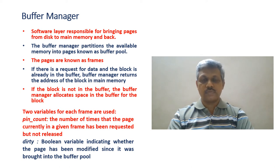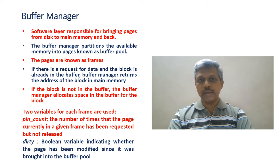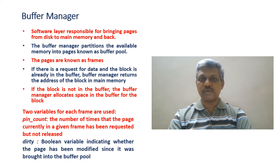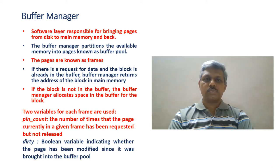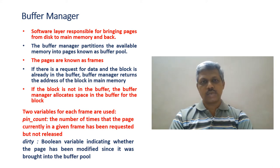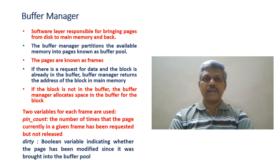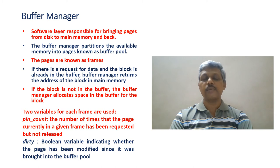Whereas if the data is not available in the buffer pool, then it has to allocate one of the frames for the transfer of data into that frame. To do this kind of processing, it maintains a bookkeeping style of functioning, and it maintains two parameters for each frame.